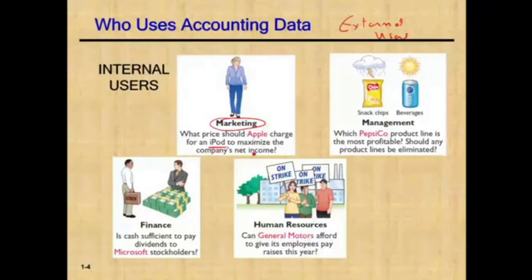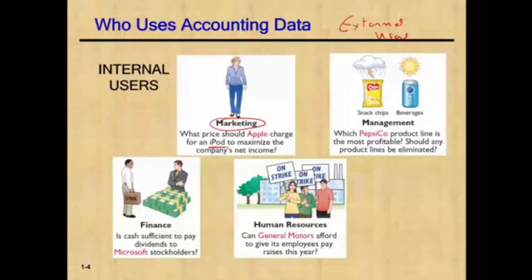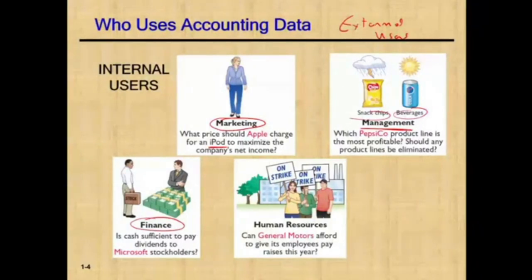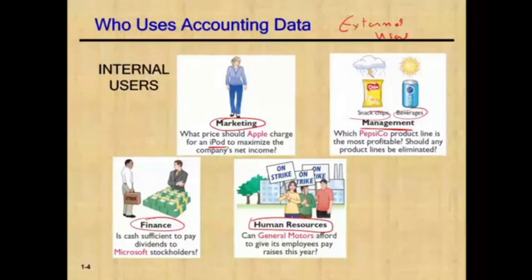For example, what price should Apple charge for the iPod to maximize net income? The marketing people need financial data to determine if they can charge $30, $50, or $100. Management might ask: which PepsiCo product line is the most profitable — the soda, beverages, or snack chips? Finance might ask: is there sufficient cash to pay dividends to Microsoft stockholders? And HR might ask: can GM afford to give employees a pay raise? These are all internal users making internal decisions.